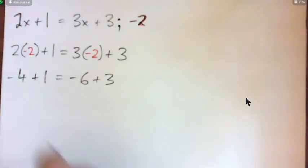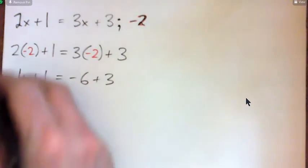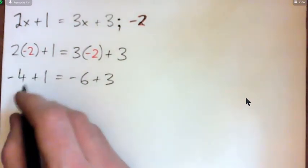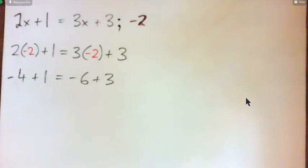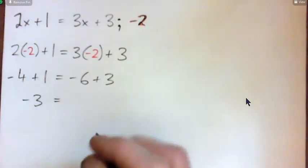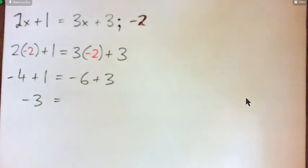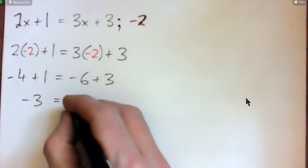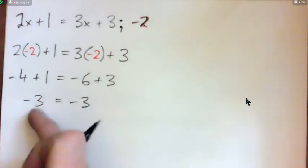So negative 4 plus 1 would be 4 bad guys and one good guy. Negative 6 plus 3 - 6 bad guys plus 3 good guys. So we get the same thing on both sides: negative 3 equals negative 3.